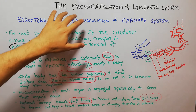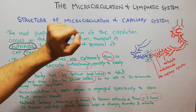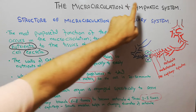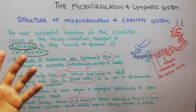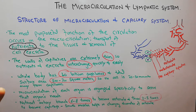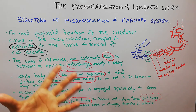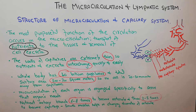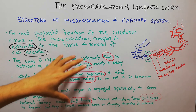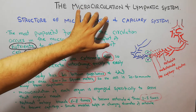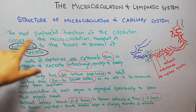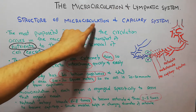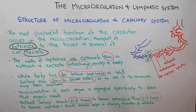Today we are going to start a new series of lectures about the microcirculation and lymphatic system. So far we have been discussing the circulatory system — the arteries, the veins, the arterial pressure, the venous pressure. Now we are going to discuss the microcirculation, and the first topic is the structure of the microcirculation and the capillary system.